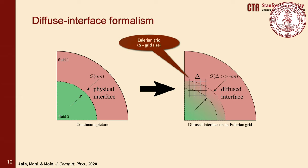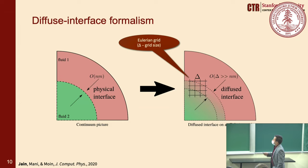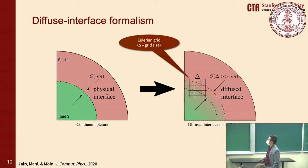Looking at the continuum picture of the interface between fluid 1 and fluid 2, the actual physical interface thickness is on the order of nanometers — effectively sharp for continuum modeling. This poses a challenge for Eulerian methods due to discontinuities and jumps in field quantities at the interface. The idea behind the diffuse interface method is to artificially represent this interface as a diffuse region spread across a couple of grid points, allowing us to resolve all jumps in density and other quantities on an Eulerian grid.